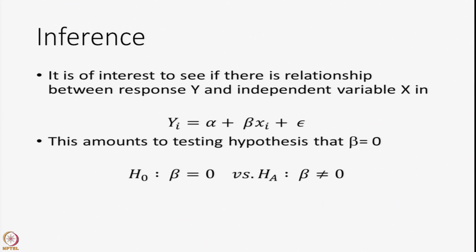We assumed that yi and xi have a linear relationship. It is important to test whether any relationship ever exists. If we want to test such a hypothesis, it amounts to testing the hypothesis that the parameter beta is equal to 0. Because if beta is 0, yi is simply alpha plus a random error, so it becomes a completely random process without any systematic change. So we want to test H0: beta = 0 versus the alternate hypothesis beta ≠ 0.